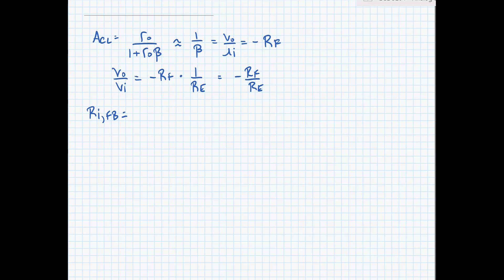Our input resistance before feedback is equal to RI in parallel with RF. And after feedback, it's a shunt connection, so we're going to reduce this by 1 plus little r 0 times beta. Our output resistance after feedback is equal to the output resistance, which would be equal to little r 0 in parallel, or big r 0 in parallel with RF, divided by 1 plus little r 0 times beta. In other words, it's also a shunt connection, and so the overall resistance is reduced.